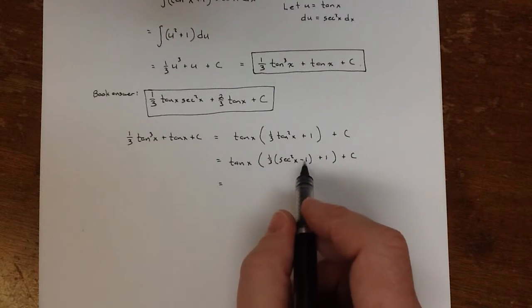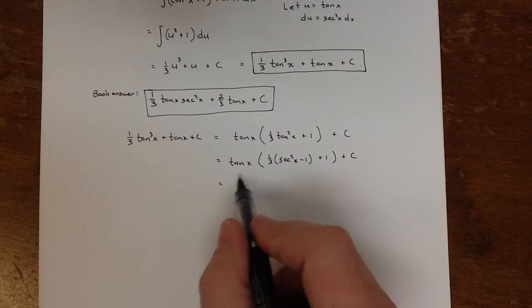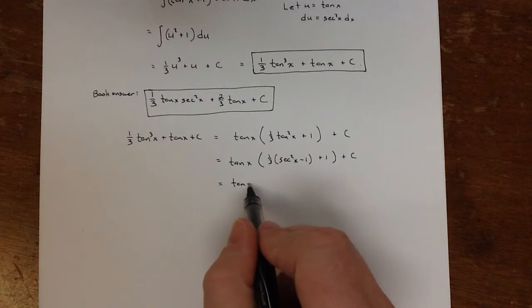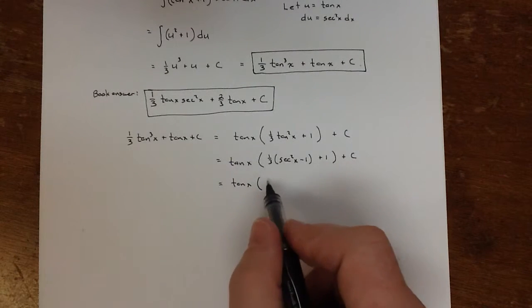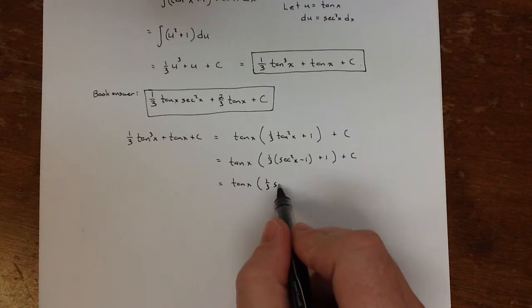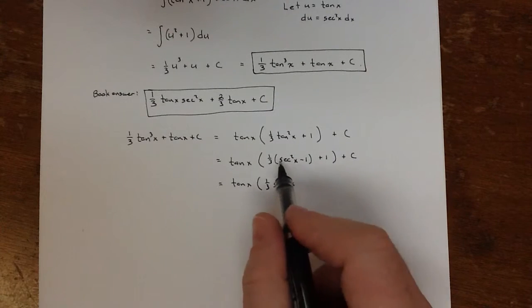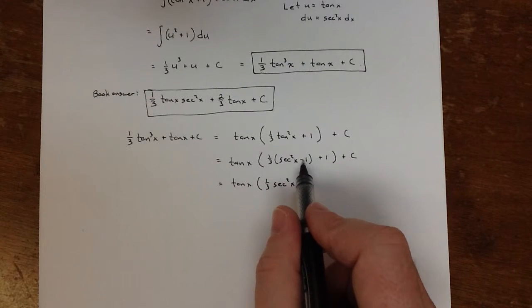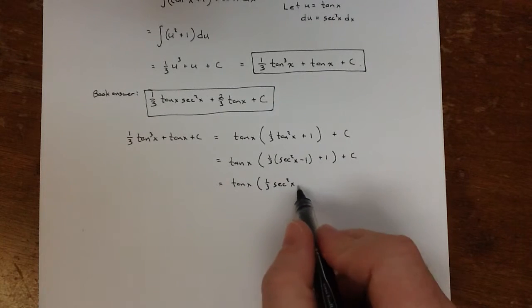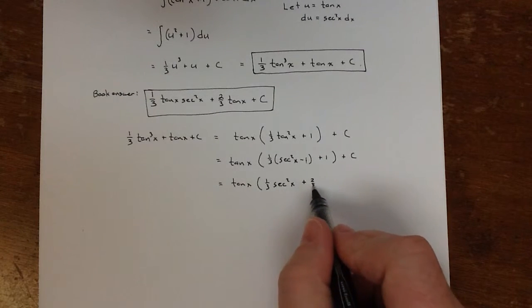So if I distribute this through, I get tan x times 1/3 secant squared x. And I get minus 1/3 from here and then plus 1. So together that's plus 2/3.